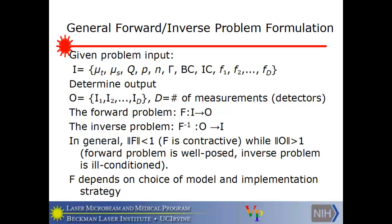Now I'm going to try to explain for those who want to understand this sort of abstract notation. I'm trying to just write out how you formulate these problems in an abstract way. So if the set of input parameters is called capital I, then here they are. Mu t, mu s, q, the physical source, p is the scattering phase function, n is the refractive index, gamma is the phase space, boundary conditions, initial conditions, and the f's describe placements of detectors.